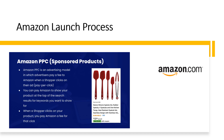The way to do this is by using Amazon Pay Per Click PPC advertising and an attractive price. Amazon PPC is an advertising model in which advertisers pay a fee to Amazon when a shopper clicks on their ad. You can pay Amazon to show your product at the top of the search results for keywords that you want to show up for. When a shopper clicks on your product, you pay Amazon a fee for that click. Where it says Sponsored, that is an Amazon PPC or Pay Per Click sponsored ad.